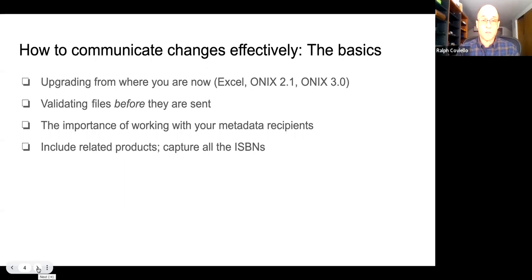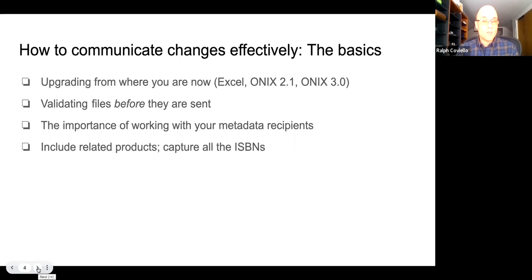Working with your metadata recipients is critical. Your recipients might have particular requirements for the different types of channels they support. I'm involved with supporting two very different types of channels — one has very stringent requirements because of actually hosting ebook files, whereas the other is more metadata-only and informational. Each one has different needs. It's important to reach out and get any guidelines your recipients have so that you can get test files to them that will work, get into production as quickly as possible, and have your books discovered.